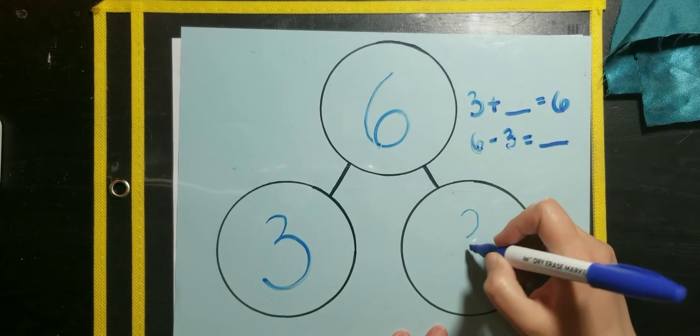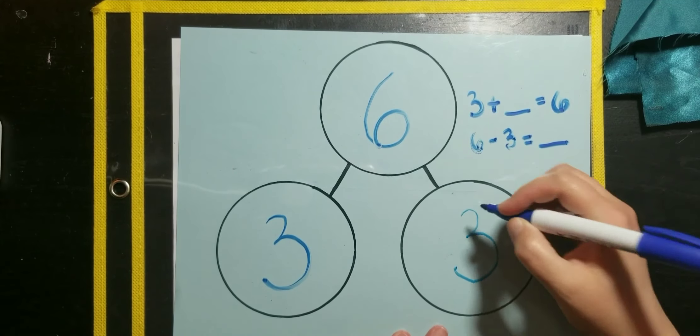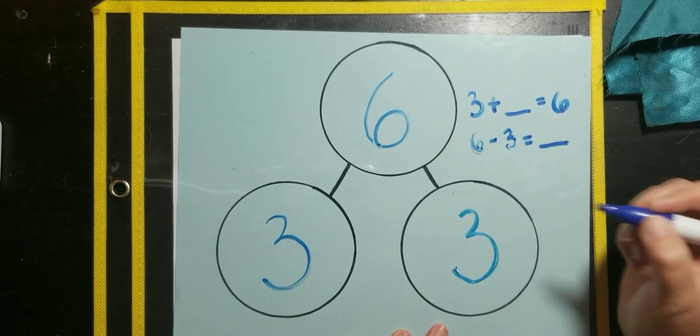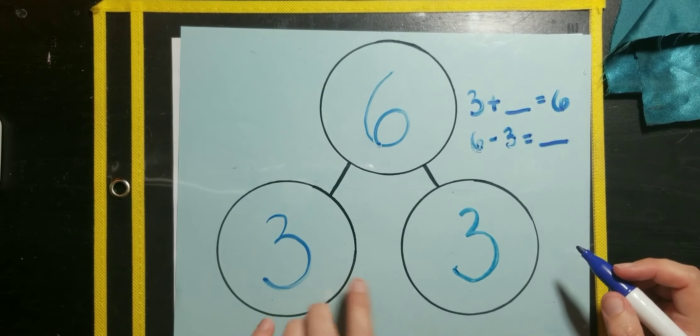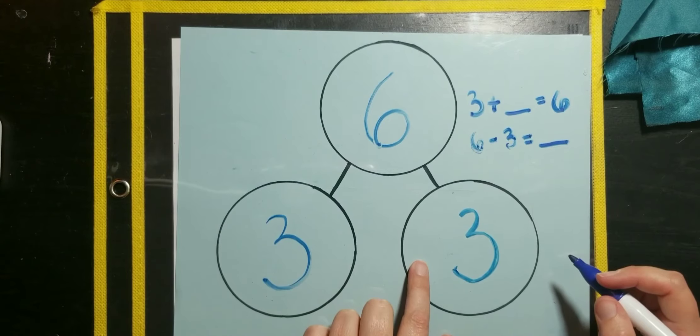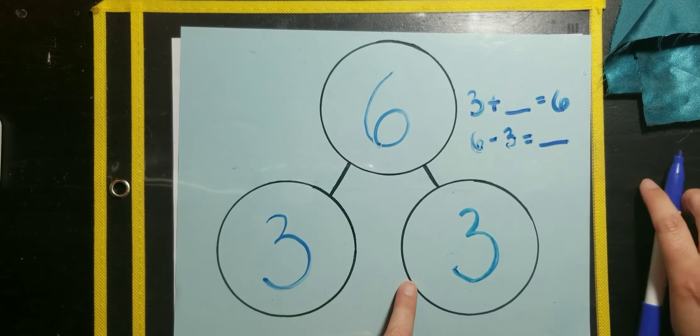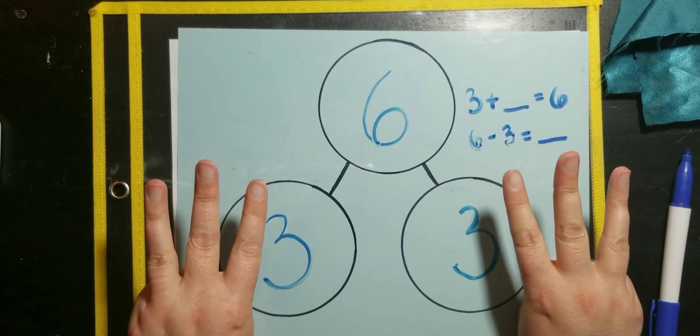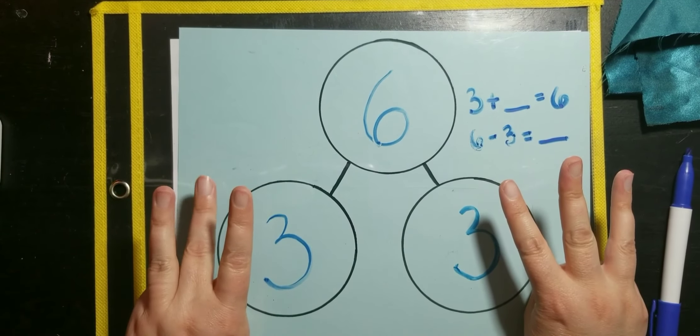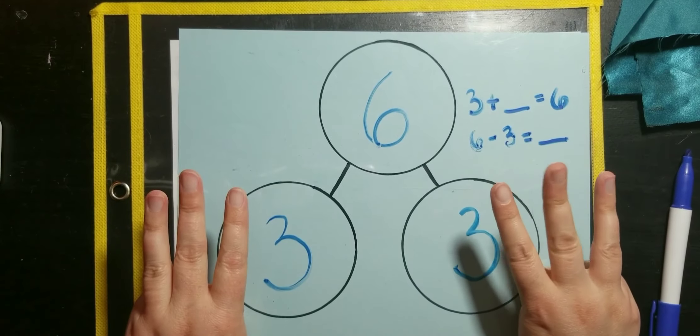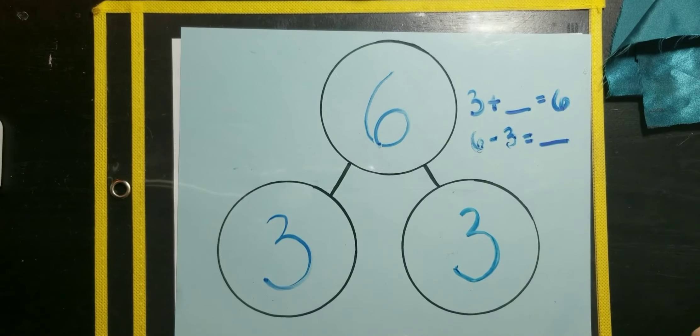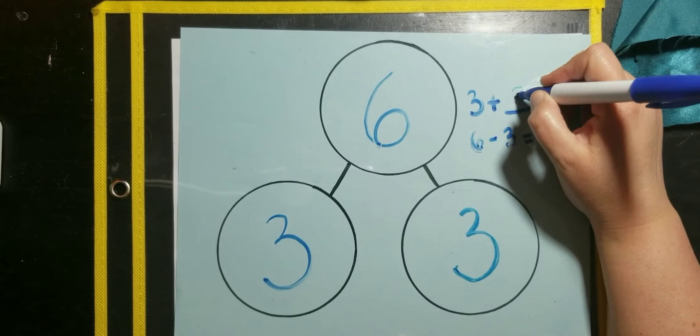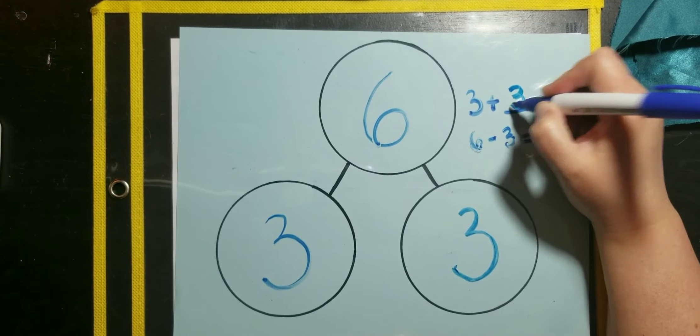So, three is the number that goes in the other part. This is a brand new marker. I haven't used it before. Okay. So, now we know that three plus three equals six. And if we need to check ourselves, we can always use our fingers. I can do three fingers and three fingers on each hand. And let's count them. One, two, three, four, five, six. So, that's the correct answer. We have six total. So, three plus three equals six. Okay?